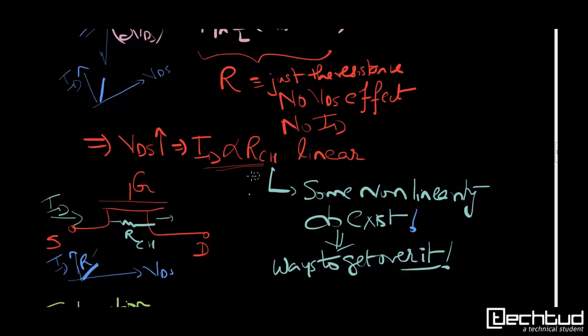So suppose you plot ID versus VDSSAT in deep triode, what you will see is that it's a resistance behavior. But mind that VDSSAT is very very small compared to VGS-VTH, there will be some nonlinearity that will exist, but this behavior you can get, and there are ways to get over it. We will see how we will do it in future lectures, but this is the condition that we try to use of the MOSFET.